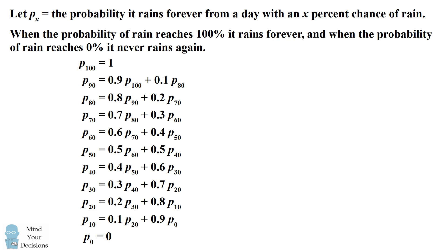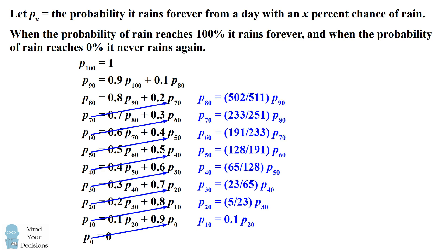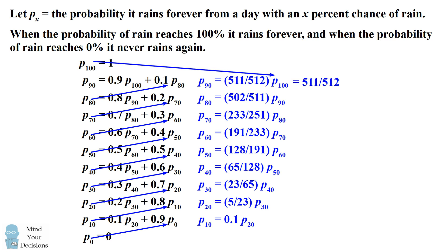We start from the very last equation. We have p sub 0 is equal to 0, which we then substitute into the next equation. We then get p sub 10 in terms of p sub 20. We'll use this information and substitute into the next equation. We can slowly climb up this ladder of equations and get each state in terms of the probability of another state. When we get to the top, we have p sub 90 is equal to 511 over 512 times p sub 100. Now we know that p sub 100 is equal to 1, so this is equal to 511 over 512.